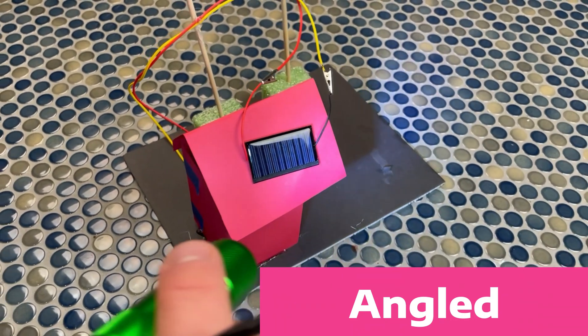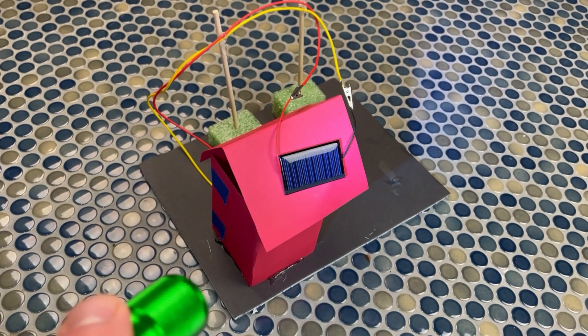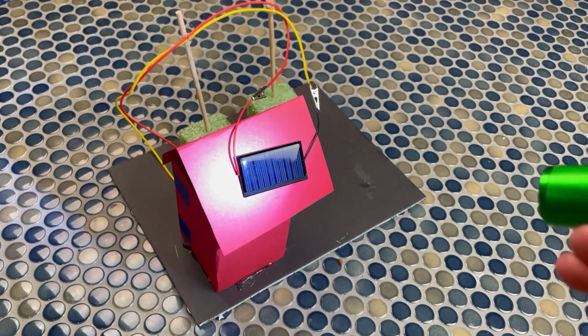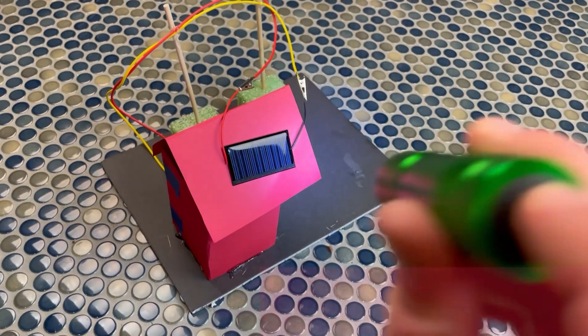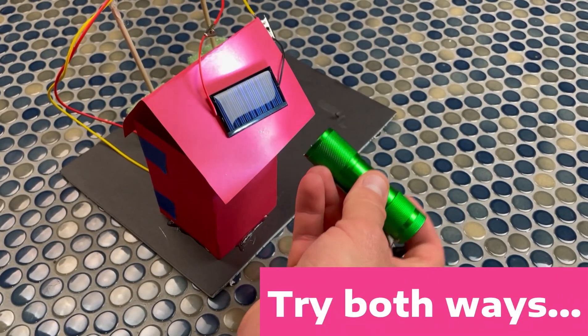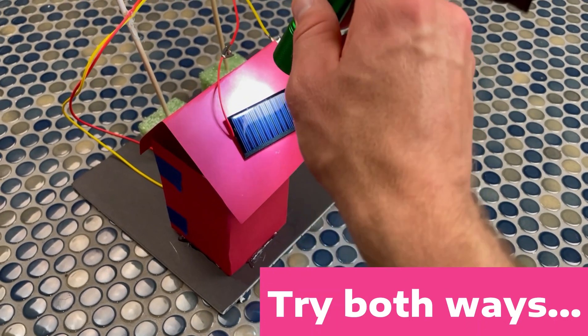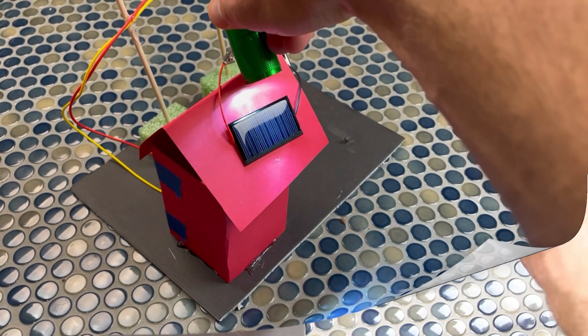And the angled part is trying to simulate the sun rising and setting, and everything in between, when it's hitting the solar panel at different angles. Try running through the different angles going both ways on the solar panels. Maybe one will be better than the other, and you can jot that down on your activity guide.